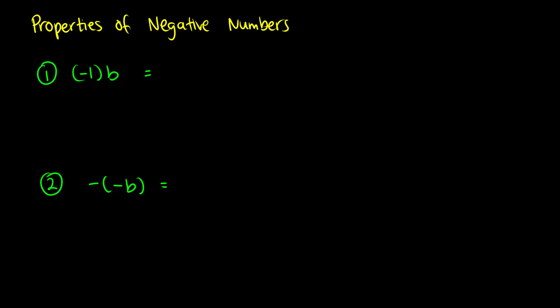First we'll look at multiplication. If we have negative 1 and we multiply it by any number b — so this could be 3, 4, 7, 18, and so on — essentially we're just taking the negative of that number. So negative 1 times b gives us negative b back.